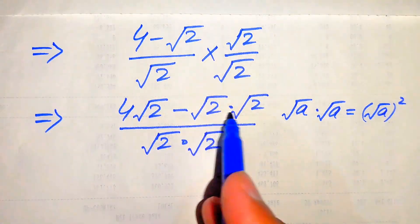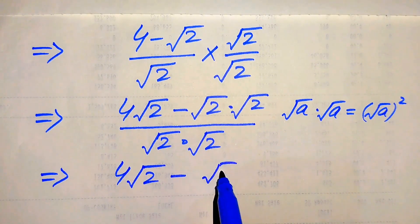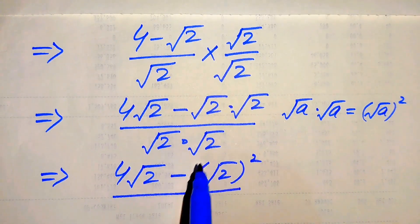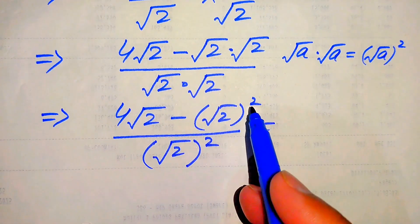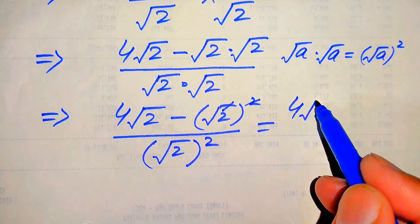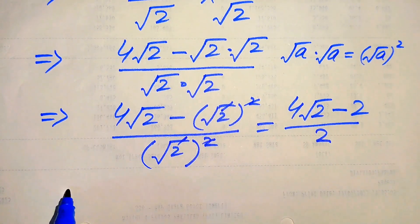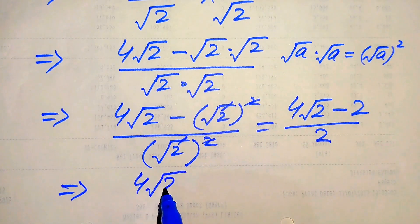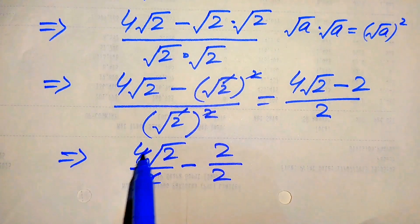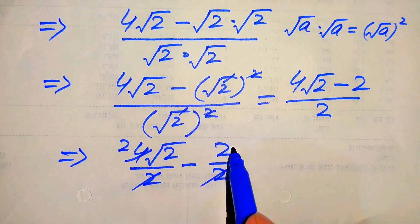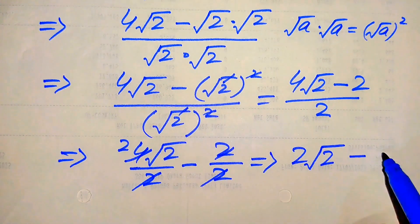Combining the terms, we have 4 times square root of 2 minus (square root of 2) squared, divided by (square root of 2) squared. The squares and square roots cancel, giving us 4 times square root of 2 minus 2, all divided by 2. We break this fraction as 4 times square root of 2 divided by 2, minus 2 divided by 2. Simplifying: the first term gives 2 times square root of 2, the second gives 1. So our final answer is 2 times square root of 2 minus 1.